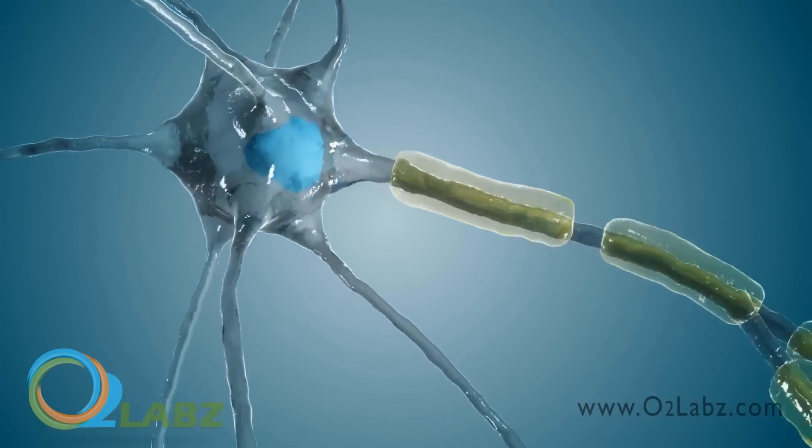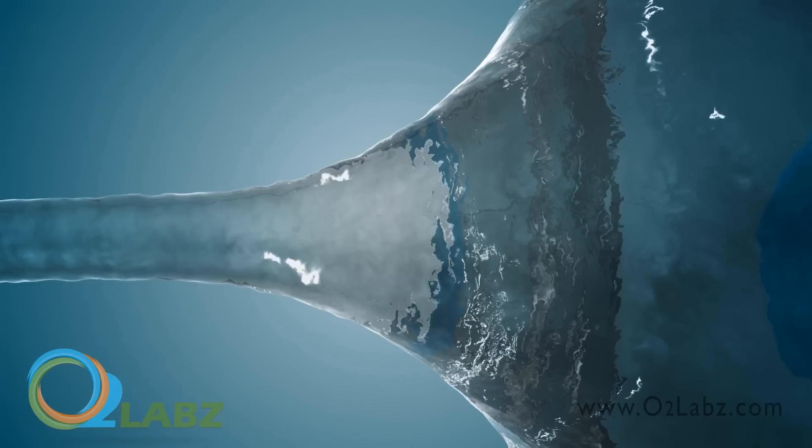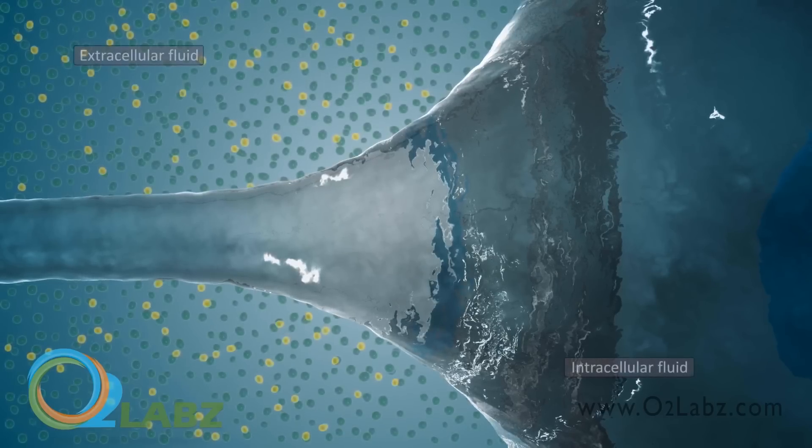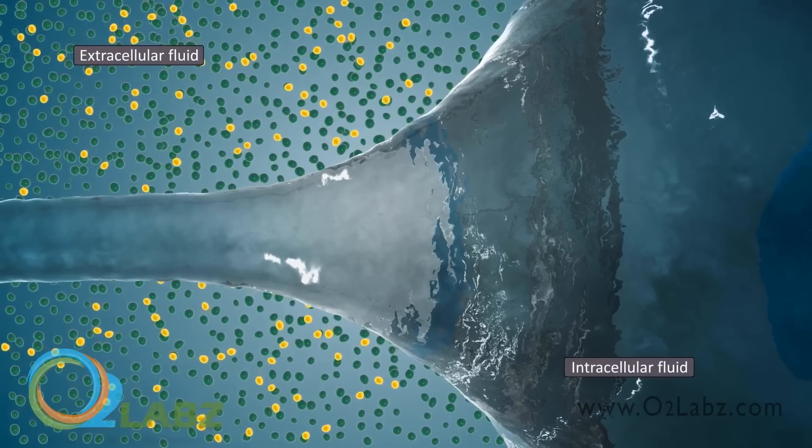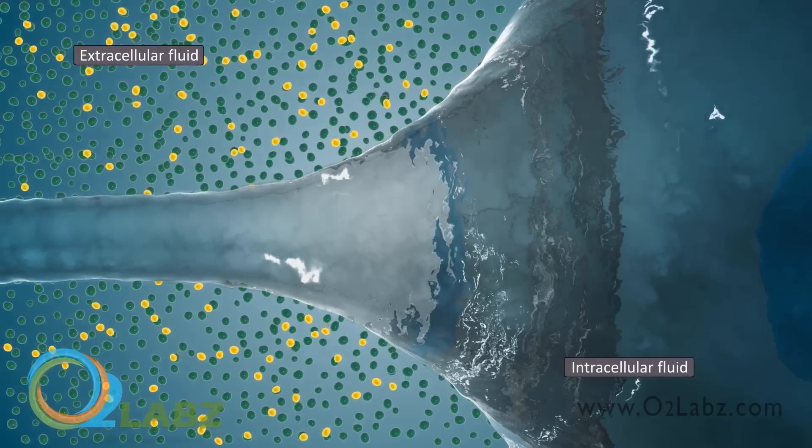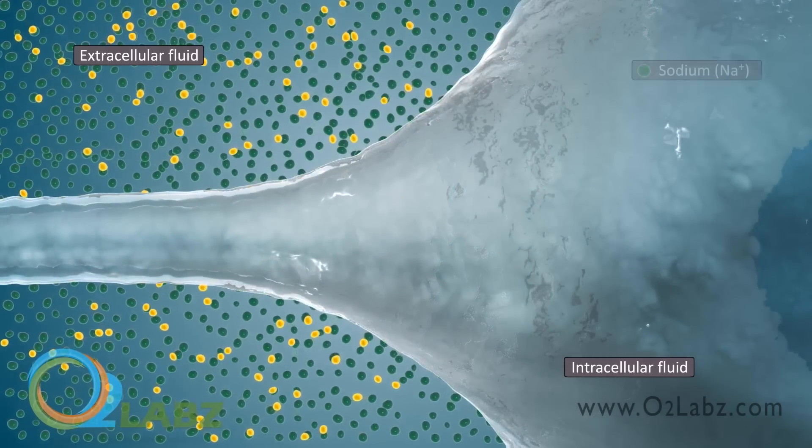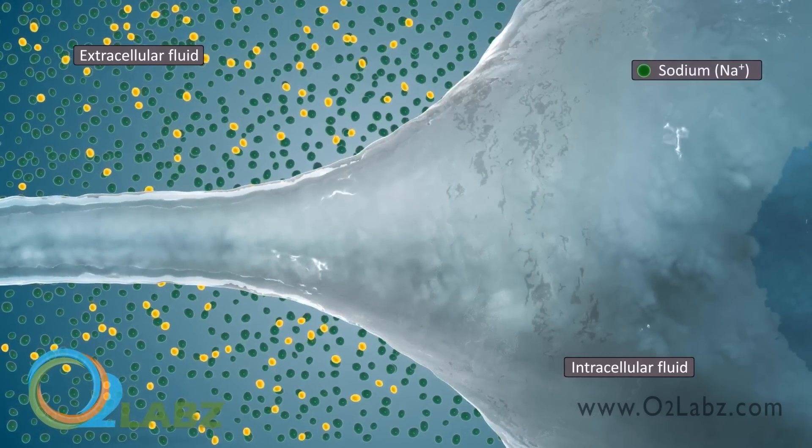To understand how a membrane potential occurs, we need to first consider the chemicals on either side of the cell membrane. The outside of each cell is bathed in a sodium chloride solution, made up of positively charged sodium ions and negatively charged chloride ions.